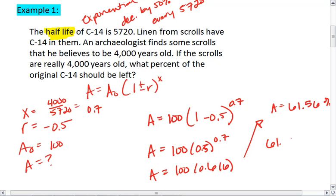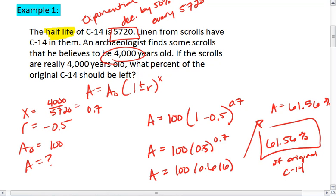So we have, if the scrolls are really 4,000 years old, they should have 61.56% of the original C14 content. And the reason that makes sense is because we know if we've gone through 4,000 years, we've only gone through part of a half-life. We haven't even made it to the full half-life. Thus, we should not be down to 50%. We should be above that 50% mark. And 61.56 is above the 50% mark.